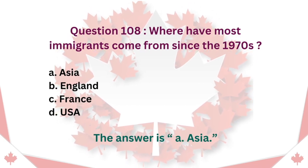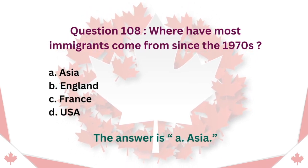Question 108: Where have most immigrants come from since the 1970s? A. Asia. B. England. C. France. D. USA. The answer is A. Asia.